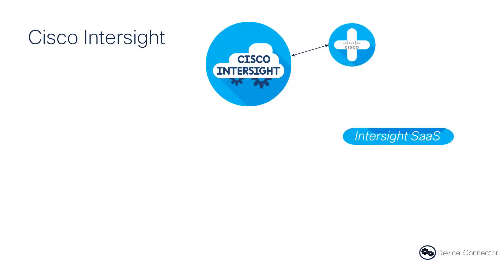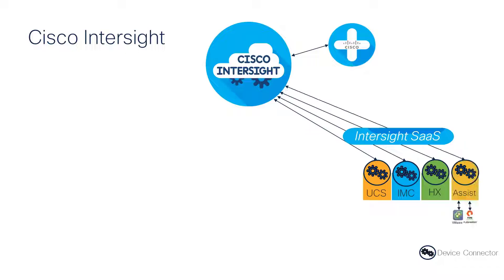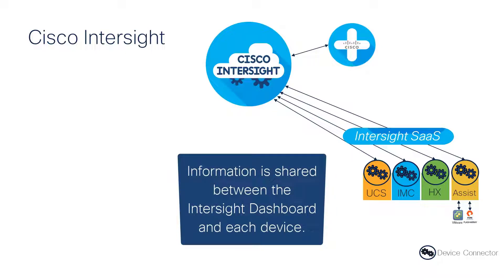The first deployment option is our SaaS, or software as a service, solution. It allows us to communicate with common devices we'll see in our data center, like our Unified Compute System, a standalone server running CIMC (the Cisco Integrated Management Controller), HyperFlex, or even a third-party utility, and talk back to the Cisco Intersight dashboard. This gives us the ability to see all of our equipment under one roof, with information and management data flowing back and forth between the Intersight dashboard and each device.